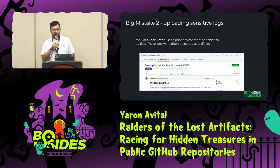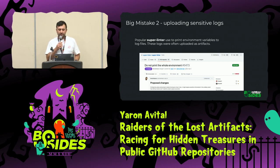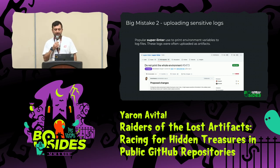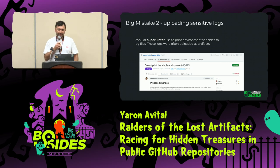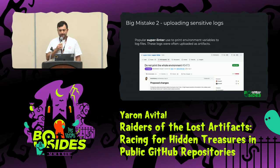Another problematic pattern I noticed is that users of the very popular Super Linter — a code linter that supports many languages — had it configured to print the entire environment variables to logs. In the context of CI/CD, where secrets are loaded as environment variables, that's probably not the best idea. And these logs were uploaded as artifacts as well.